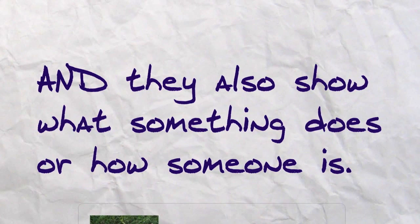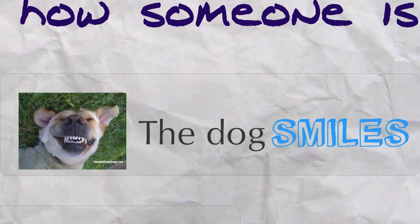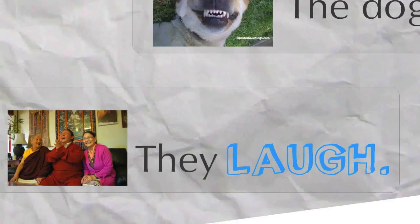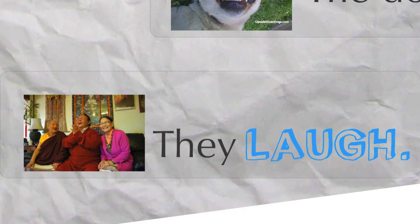Verbs are important because they also show what something does or how someone is. For example, 'the dog smiles.' Smiles is the verb showing what the subject dog is doing. Another example is 'they laugh.' Laugh is the verb showing what the subject they is doing.